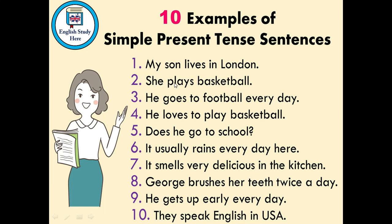There is subject-verb agreement: if your subject is singular, your verb will be plural — meaning it takes 's'. If your subject is plural, your verb will be singular — no 's'. This is vice versa; you cannot use a singular subject with a singular verb. For example: she plays football. He goes to football every day — 'he' is singular subject, 'goes' has 'es', 'football' is object. He loves to play basketball — 'he' is subject, 'loves' is the verb.